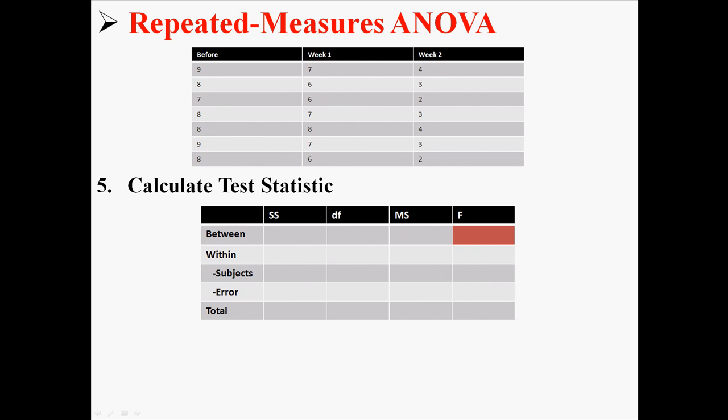Except now within is split into subjects and error. Because some of the within subjects variability is consistent within subjects, and some of it is just due to random error. Because we're measuring the same people multiple times, we can now split that up into those two groups and account for it.